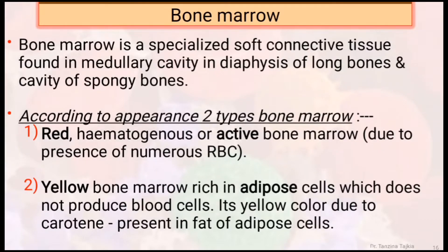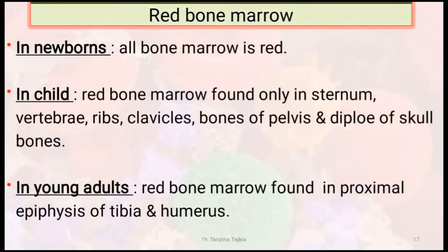Let's discuss about the bone marrow. It is the specialized soft connective tissue found in the medullary cavity, in the diaphysis of long bones, and in the cavity of spongy bones. According to appearance, bone marrow is of two types: red bone marrow and yellow bone marrow. Red bone marrow is active bone marrow, due to the presence of numerous RBCs. Yellow bone marrow is rich in adipose tissue, which does not produce blood cells; its yellow color is due to carotene present in the fat of adipose tissue. In newborns, all bone marrow is red.